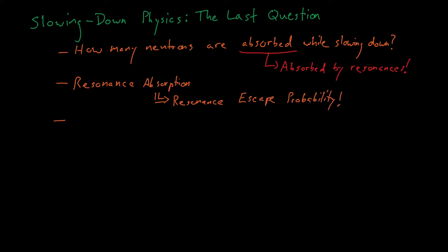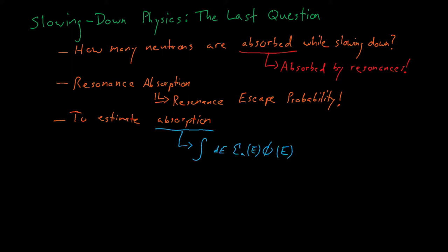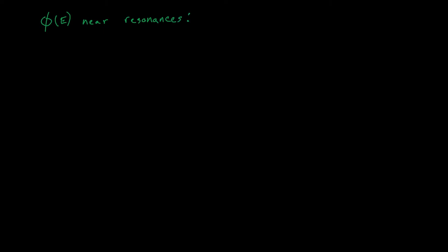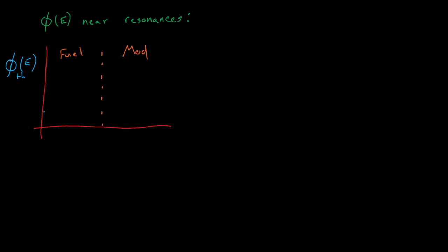To estimate the resonance absorption — which is just the integral of the absorption rate over the slowing down energies — we need to understand how the flux spectrum changes in the energies surrounding these resonances. Previously we introduced the concept of spatial self-shielding in, for example, a fuel pin.